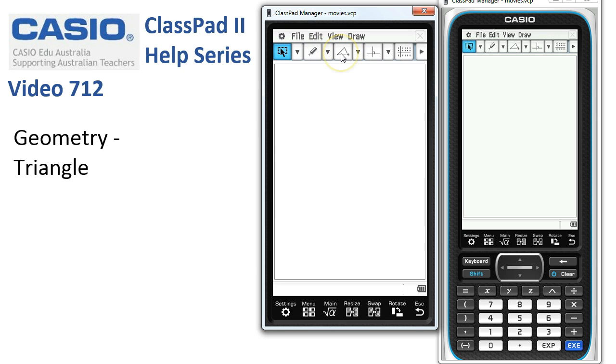Here's the triangle tool so we'll select it. The first way to draw a triangle is simply tap once on the screen and a triangle appears.